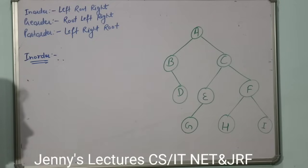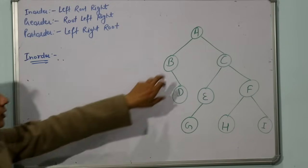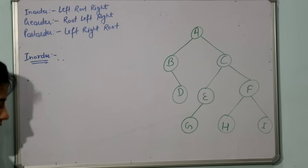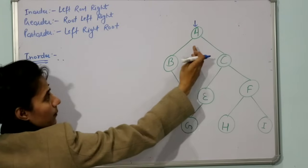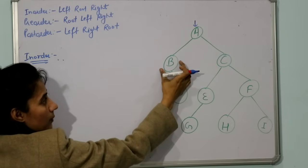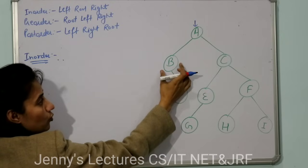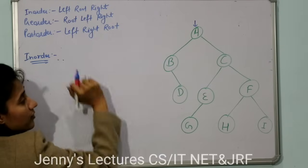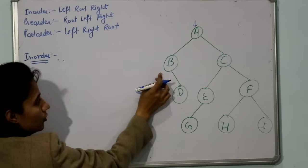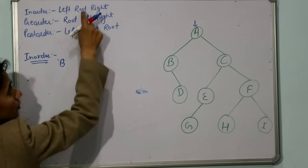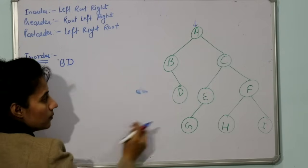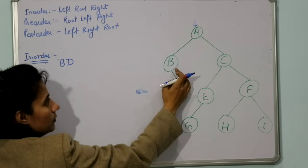For in-order traversal of this binary tree, we start from the root. In in-order, left part is traversed first, then root, then right. So we start here — this is our root, but we don't print it first. We go to the left part. The left part has nothing (null), so we print root, that is B. Then we go to the right part — right has D. Then we backtrack to B, then back to A.